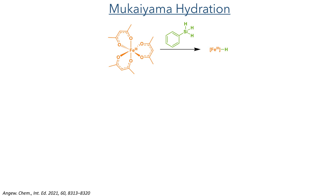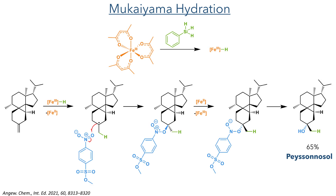This alkene then took part in a Mukaiyama hydration. An iron tris-acetylacetonate complex first reacts with phenylsilane generating an iron hydride complex. This iron hydride transfers a hydrogen radical to the double bond in a Markovnikov fashion, forming a tertiary carbon radical. This radical then added to methyl 4-nitrobenzenesulfonate, forming the desired carbon-oxygen bond. This intermediate is reduced by the iron(II) species generated from the hydride addition, and the resulting organonitrite can then be hydrolyzed to produce peysonosol in a 65% yield.